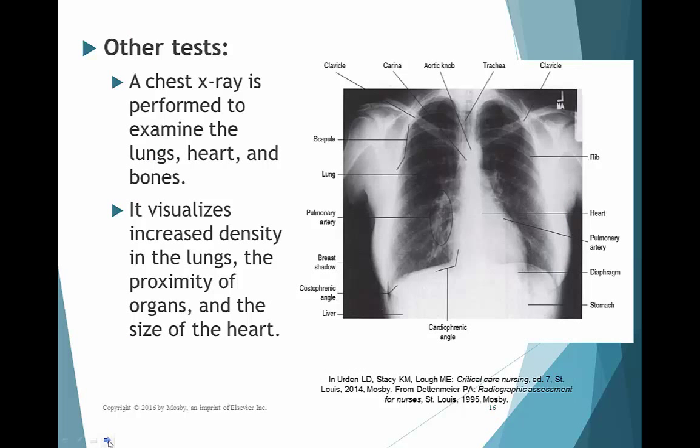A chest x-ray allows us to look at lung tissue, bone structure such as ribs for fractures, and the trachea for deviation or blockage such as a tumor. We can also get a silhouette of the cardiac heart — sometimes we can see if a patient has an enlarged heart on x-ray.